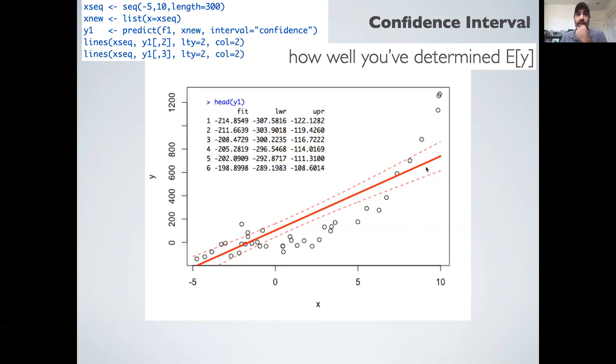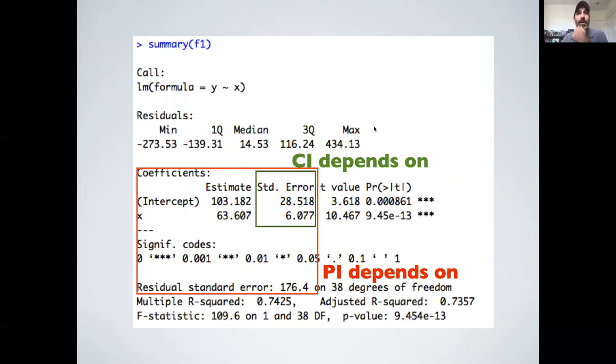So here I made an x sequence and I stuck this in a list with x pointing to this x sequence, and again this name x has to match exactly the name in the regression formula. I use my predict function with my new data, confidence interval, and I draw my lines and I get my nice hourglass shape confidence interval. Again, this is telling us our confidence about if the model is linear, what is the best line and how confident are we about what the best line is, essentially confidence about our mean.